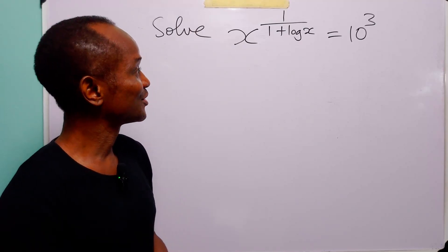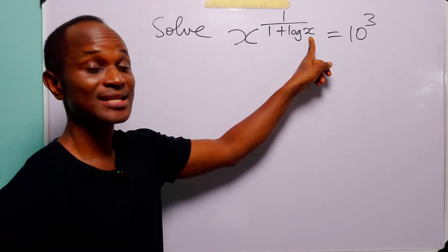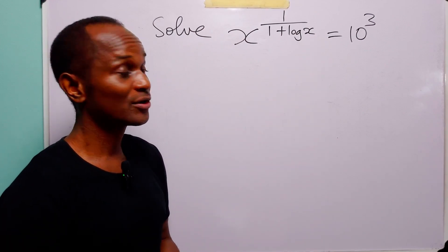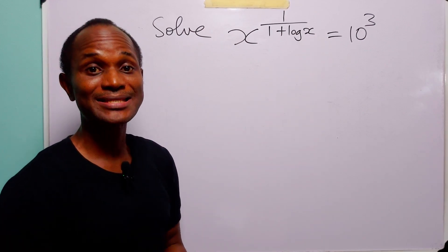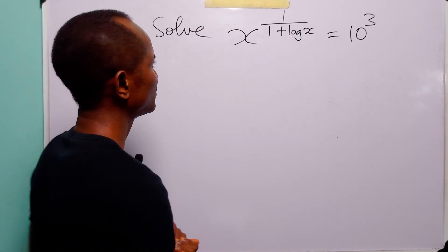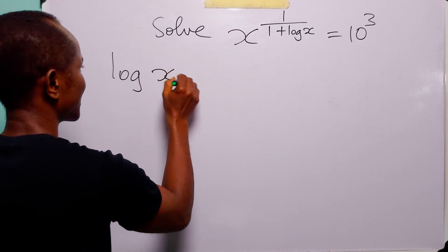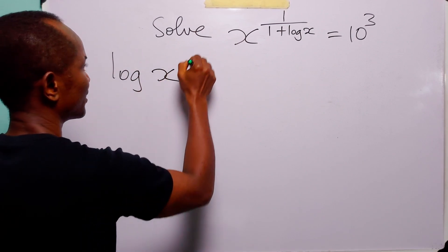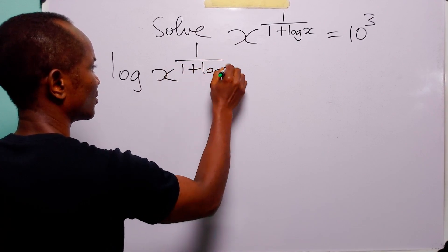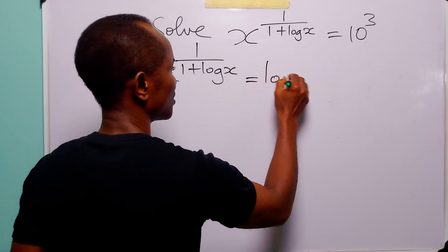Hello and welcome. In this tutorial our task is to find the value of x that satisfies this exponential equation. To do this we are going to begin by taking log of both sides of the equation. When we do that we have log x to the power 1 over (1 + log x) is equal to log 10 to the power 3.